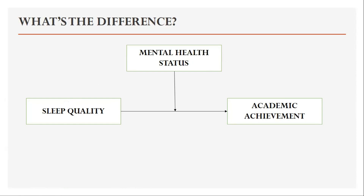A moderator changes the direction or strength of the relationship. For example, a person's mental health can influence the relationship between sleep quality and academic performance — the relationship may be stronger for people who experience problems with their mental health than for those who do not. In a moderating relationship, you can draw an arrow from the moderator to the relationship between the independent and dependent variable. These are the key differences between a mediator and a moderator.